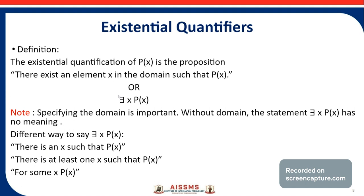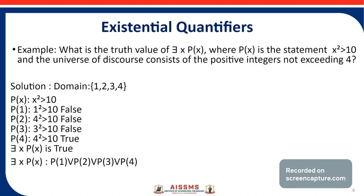Consider the example: what is the truth value of ∃x p(x), where p(x) is the statement 'x² > 10' and the universe of discourse consists of the positive integers not exceeding 4? So the domain is {1, 2, 3, 4}. We check p(x): is x² > 10?